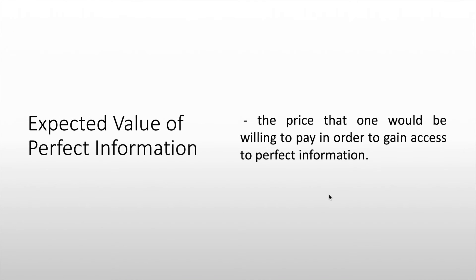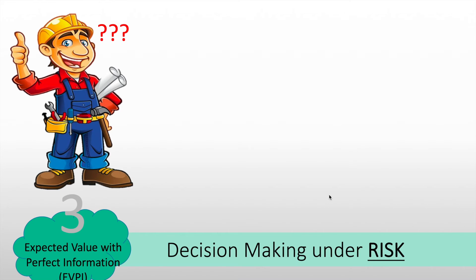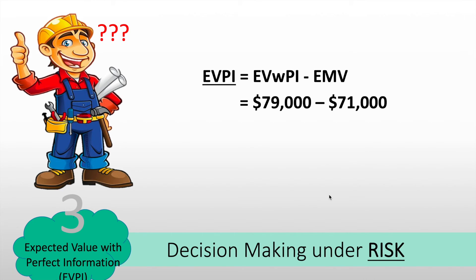Lastly, we solve for the expected value of perfect information (EVPI). This is the price difference between knowing perfect information and our base monetary value — the price one is willing to pay to gain access to perfect information. The formula is: EVPI = EVWPI − EMV, so $79,000 minus $71,000 equals $8,000. One is willing to pay $8,000 to gain access to additional information.